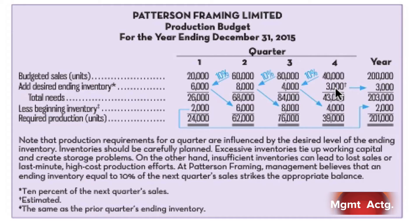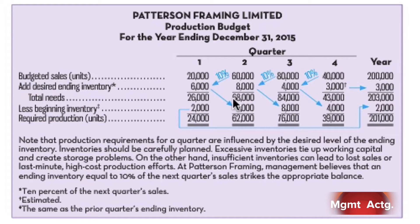Where do we get the 3,000 from? That is an estimate of Q1 of the following year. We're estimating 30,000 units for Q1 of the following year, because if we're ending with 10% of next quarter's sales, 3,000 means that must be 30,000. So to complete the production budget for the year, we need estimates of each quarter's sales plus the following quarter of the next year. That gives us our total needs - we simply add the two columns together.